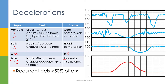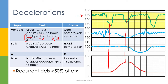A variable deceleration usually occurs with contractions but can occur before or after. They look like upside-down accelerations: an abrupt change (less than 30 seconds) to the nadir, dropping more than 15 beats per minute, lasting more than 15 seconds — the same 15×15 criteria as accelerations but inverted. Variables typically coincide with contractions and visually look like a V shape.